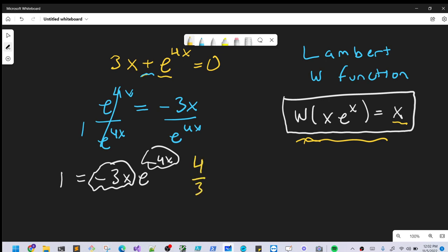What we can do is, let's multiply both sides by 4 thirds. So we multiply 4 thirds on both sides. That's going to give us 4 thirds equals minus 4x e to the minus 4x. So we now have our identical coefficient and exponent situation, exactly like what we want for the Lambert W. So we can now apply that on both sides.